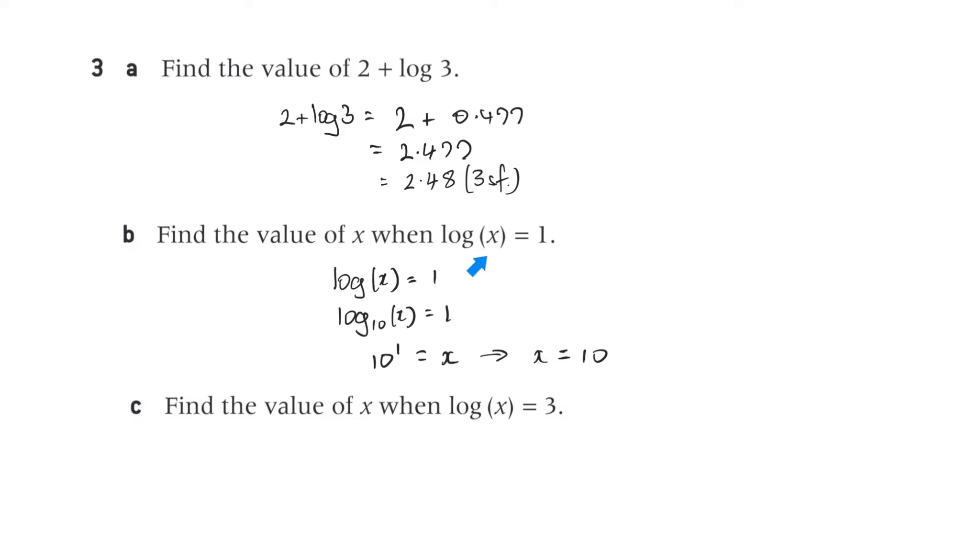Part b, find the value of x when log x equals 1. That's log base 10, so 10 to the first power equals x, and so x is equal to 10. Find the value of x when log x equals 3. Similarly, that's log base 10, x equals 3. So 10 to the power of 3 equals x. So x is equal to 1,000.